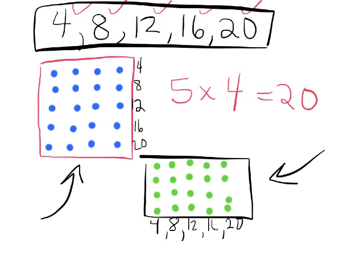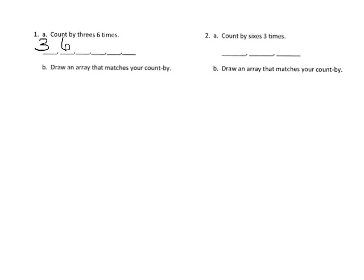So in this problem we're asked to count by threes six times: three, six, nine, twelve, fifteen, eighteen. If we were going to draw our array to match this, traditionally it would show six rows of three dots — and there is our traditional array.